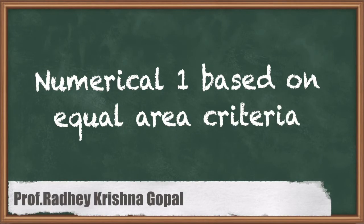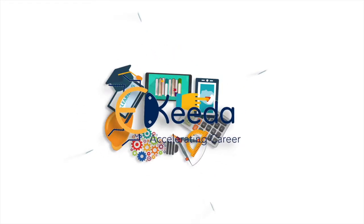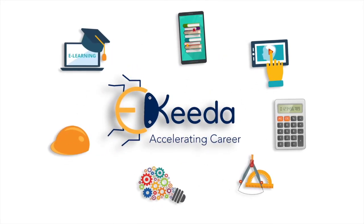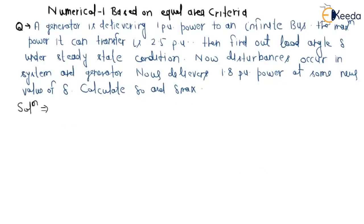Now we are going to study numerical number one based on equal area criteria. The given question is: a generator delivering one per unit power to an infinite bus. The maximum power it can transfer is 2.5 pu. Find out load angle delta under steady state condition. Now a disturbance occurs in the system.